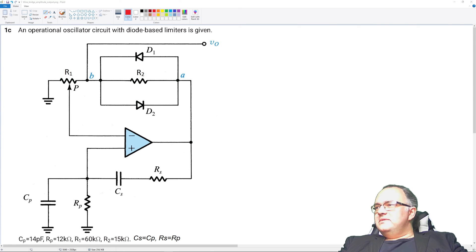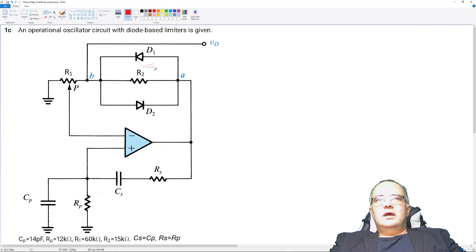Hi, my name is Gheorghe Radulov and an operational circuit of oscillator is given. The amplitude is set by these diode limiters and the output is taken from here.